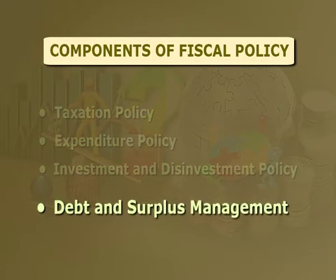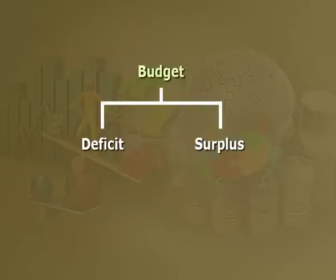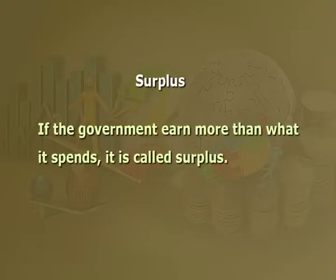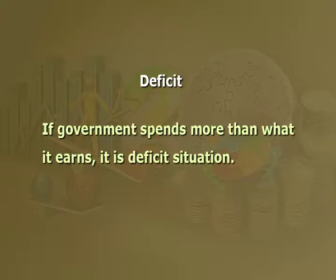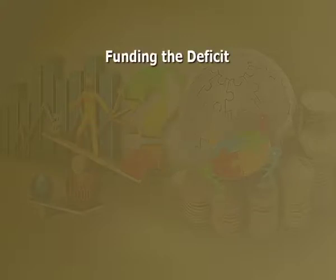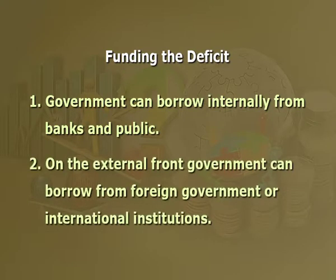Now let us look at debt or surplus management. There are two possibilities in a budget: deficit and surplus. If the government earns more than what it spends, it is called surplus. If the government spends more than what it earns, it is a deficit situation. To fund the deficit, the government has to borrow from domestic or foreign sources — internally from banks and public, or externally from foreign governments or international institutions. If borrowings dry up, the government can resort to printing currency, known as deficit financing.